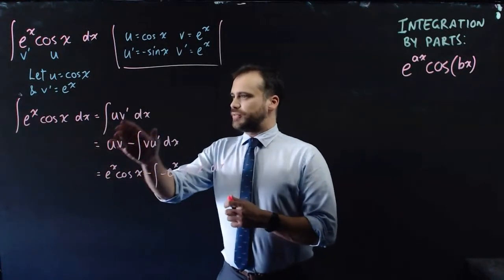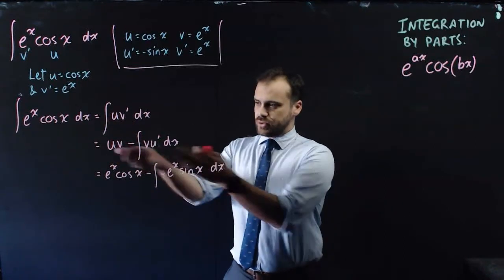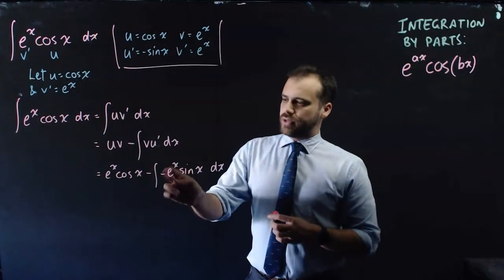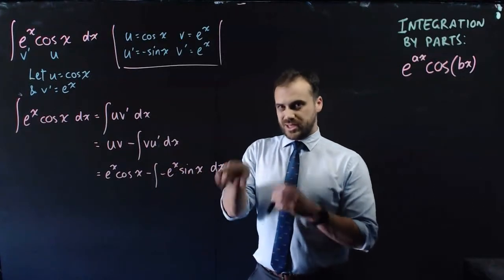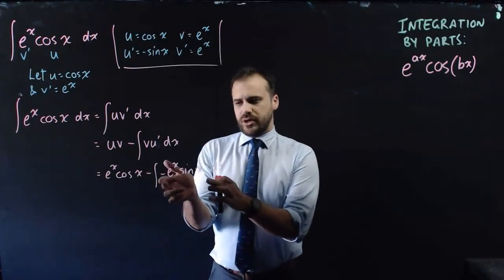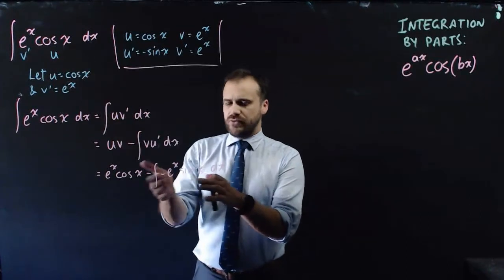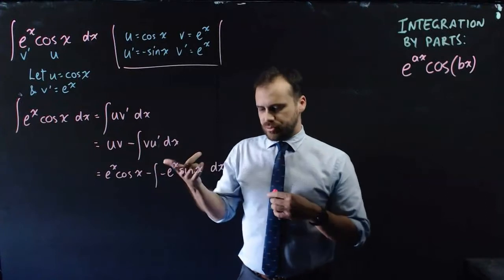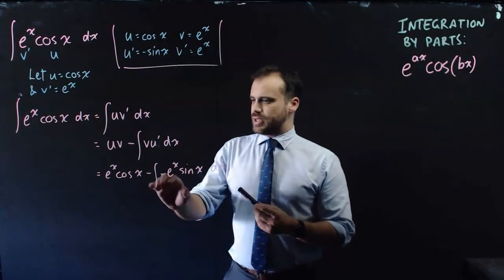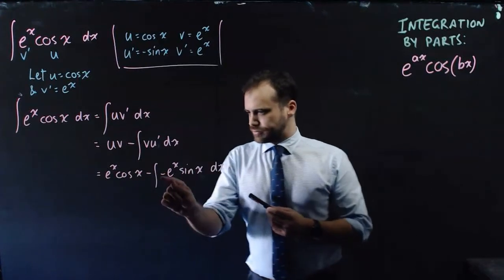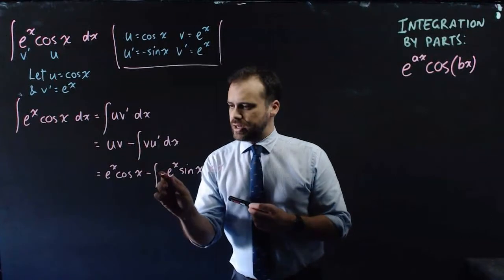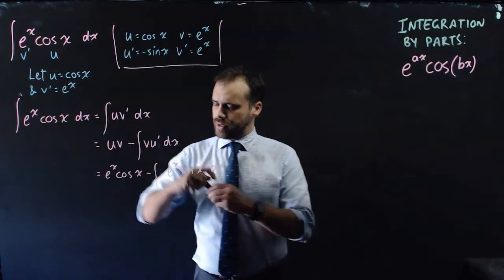So we've subbed in our u and our v into our formula. We get e to the x cos x minus the integral of negative e to the x sine x with respect to x. Okay, this is a problem here, right? Because this is of the same form, which means we still need to do an integration by parts, but we're expecting a loop. Something we can do to make this easier is there's a negative on the inside of the integral. We can move that negative outside and make that positive.